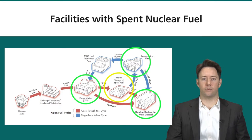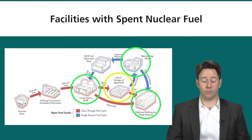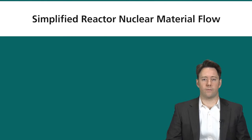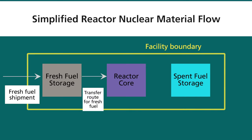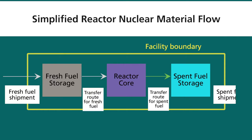In this section we'll take a closer look at the safeguards approach for nuclear reactors, and leave the analysis of interim storage of spent fuel facilities as an exercise. A simplified nuclear reactor material flow begins with fresh fuel shipment into the facility, going into fresh fuel storage, then transferring to the reactor, followed by a transfer to spent fuel storage, and finally spent fuel can be shipped off-site. We'll focus on what happens after the reactor but will include everything at the reactor site in this overview.